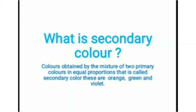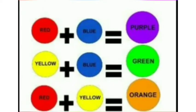What is a secondary color? Colors obtained by mixing two primary colors in equal proportion are called secondary colors. These are orange, green, and violet. When you mix red and yellow you get orange; red and blue give you violet; yellow and blue give you green. So purple, green, and orange are the secondary colors.